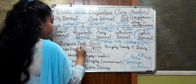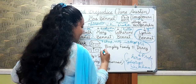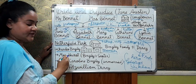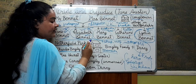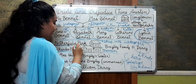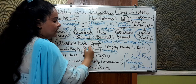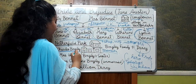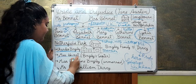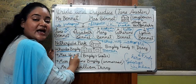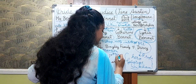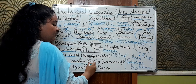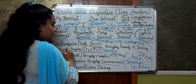Now we have Netherfield Park. Netherfield Park is a mansion which Mr. Charles Bingley has taken on rent. The Bingley family and the Darcy family are all very rich, super elite class people of that time. Charles Bingley has two sisters: Mrs. Hurst and Miss Caroline Bingley. Mrs. Hurst, as the name suggests, is married to Mr. Hurst — making Mr. Hurst the brother-in-law of Charles Bingley. Miss Caroline Bingley is unmarried.